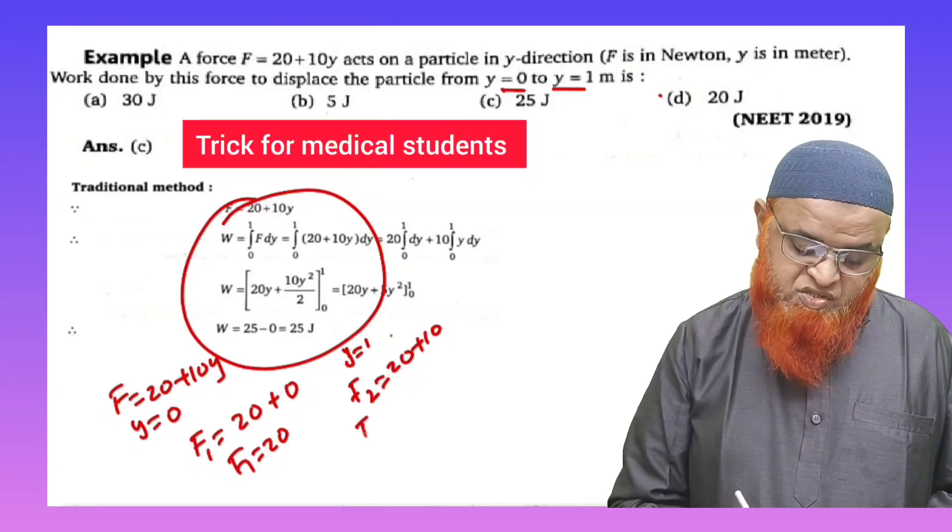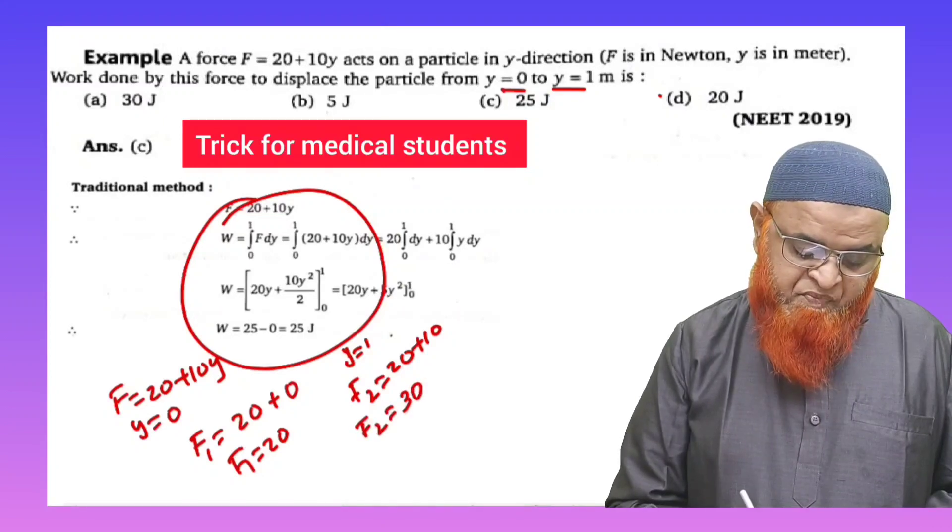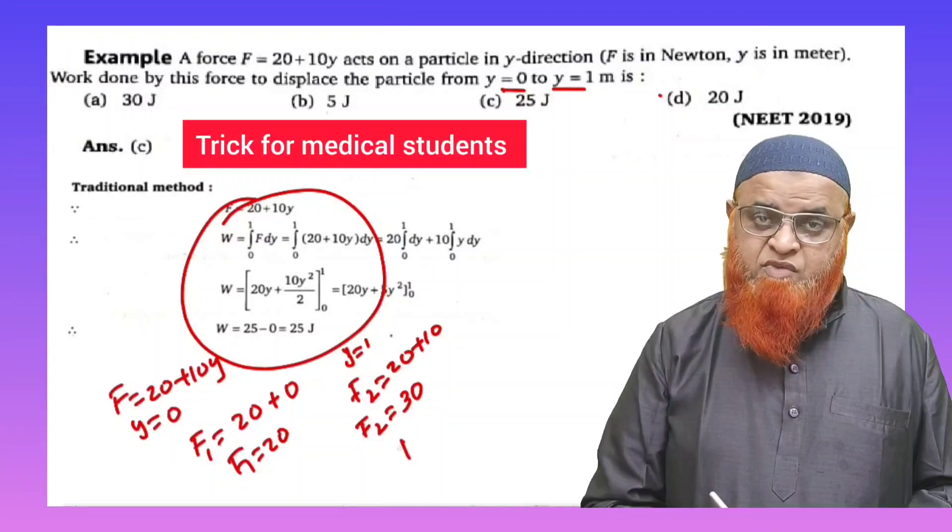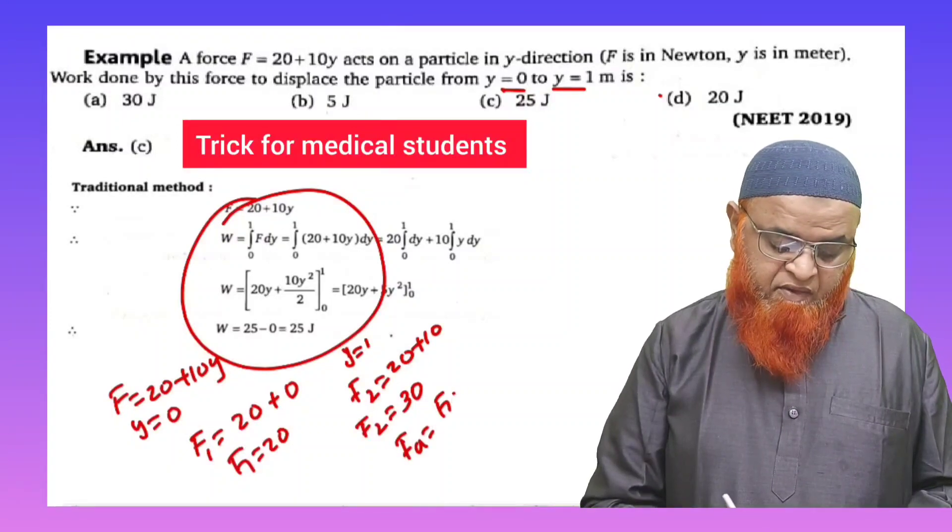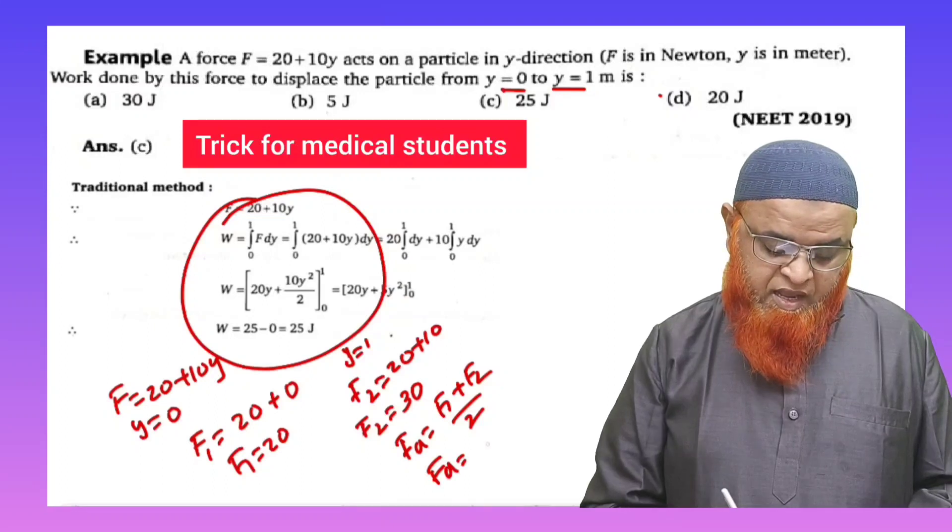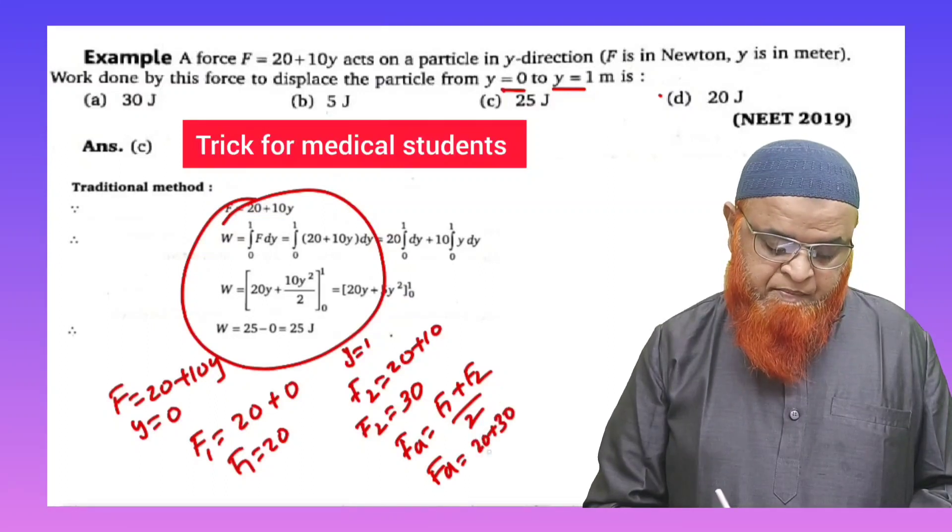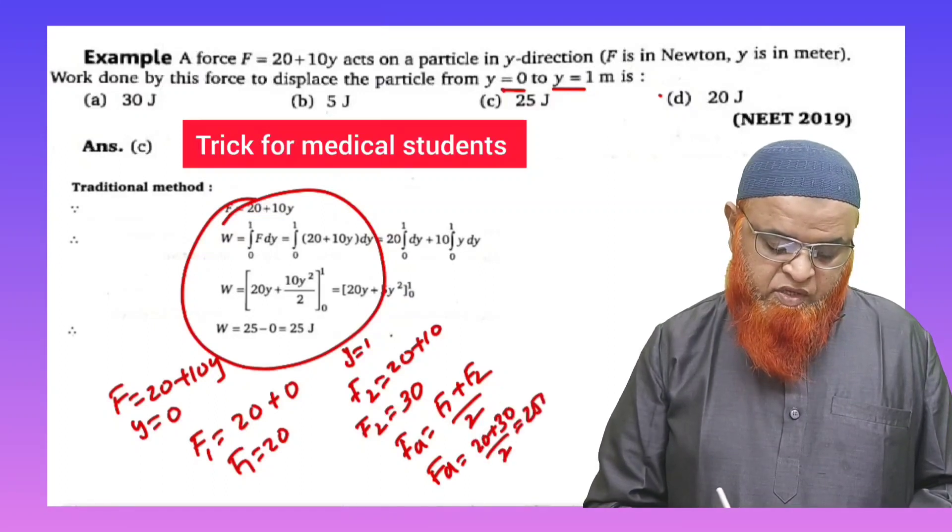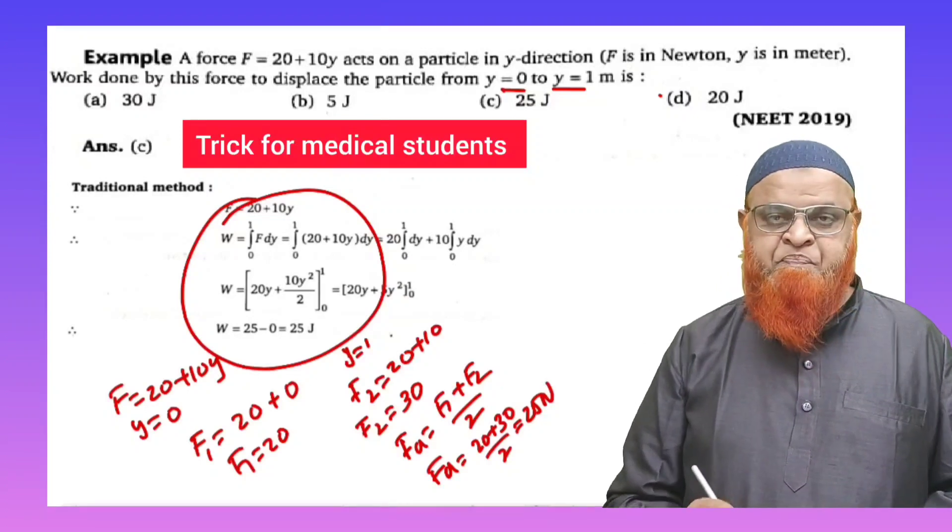Okay, so now you can find out the average of these two forces. That is, F average is equal to F1 plus F2 by 2. Therefore F average is nothing but 20 plus 30 by 2, which is nothing but 25 newtons. So we got the force.